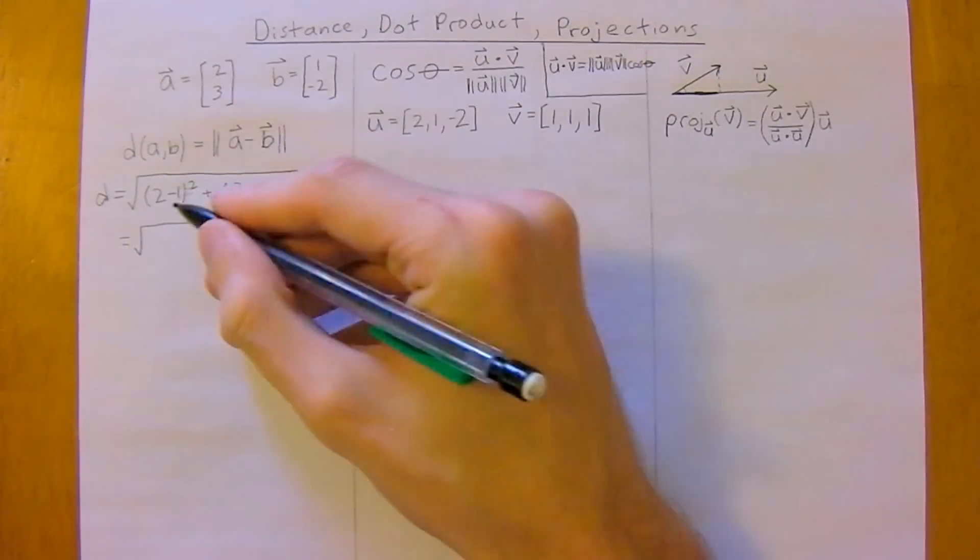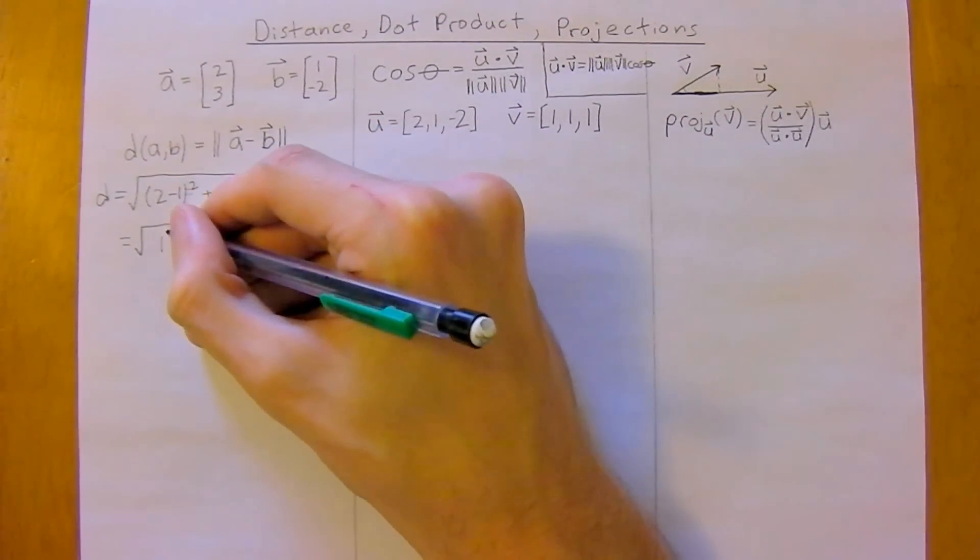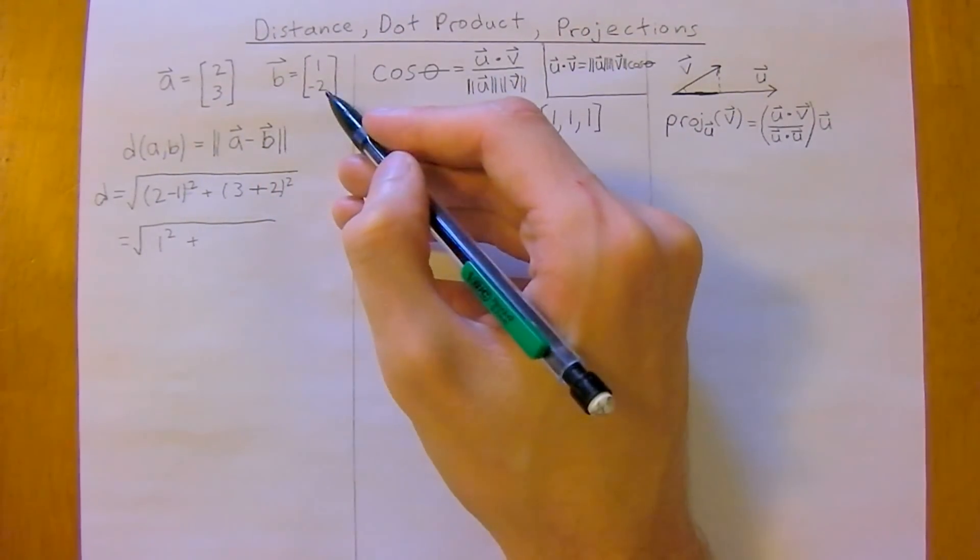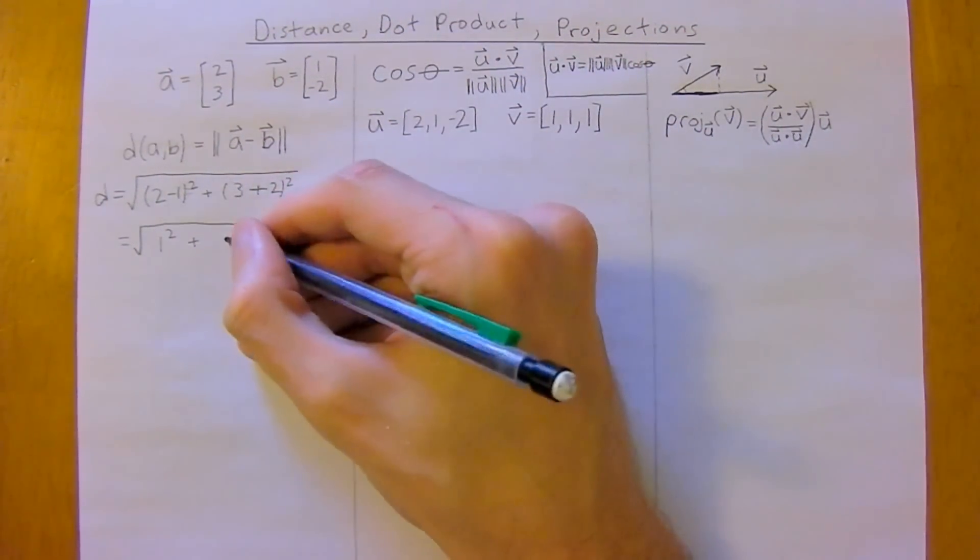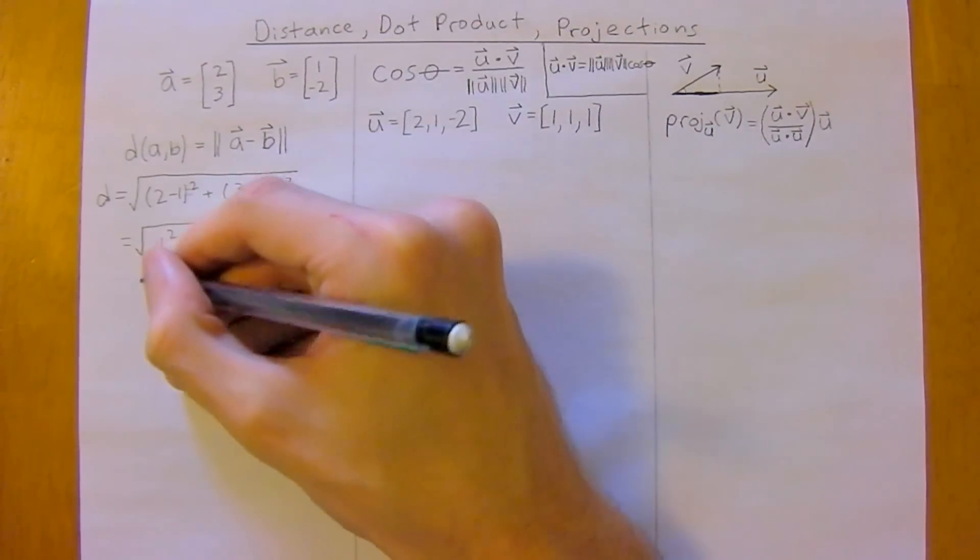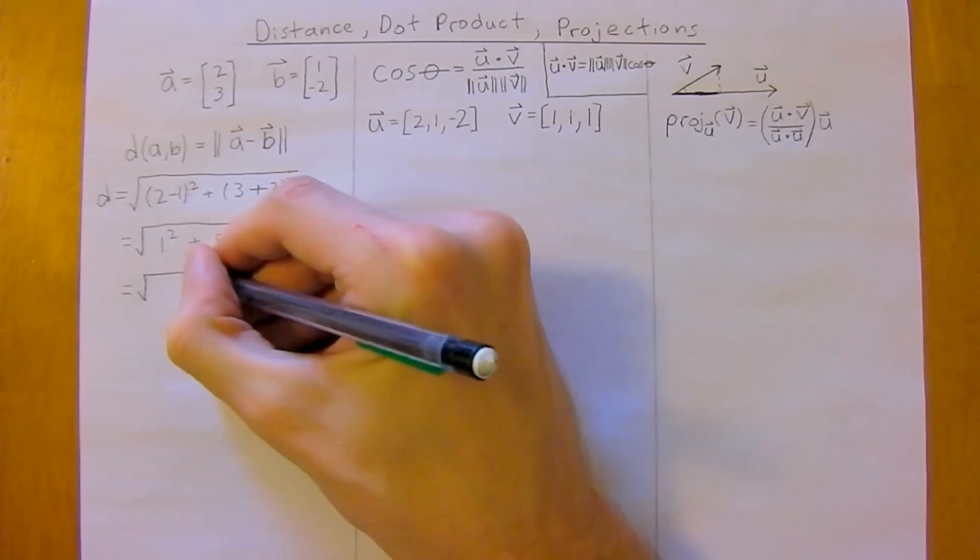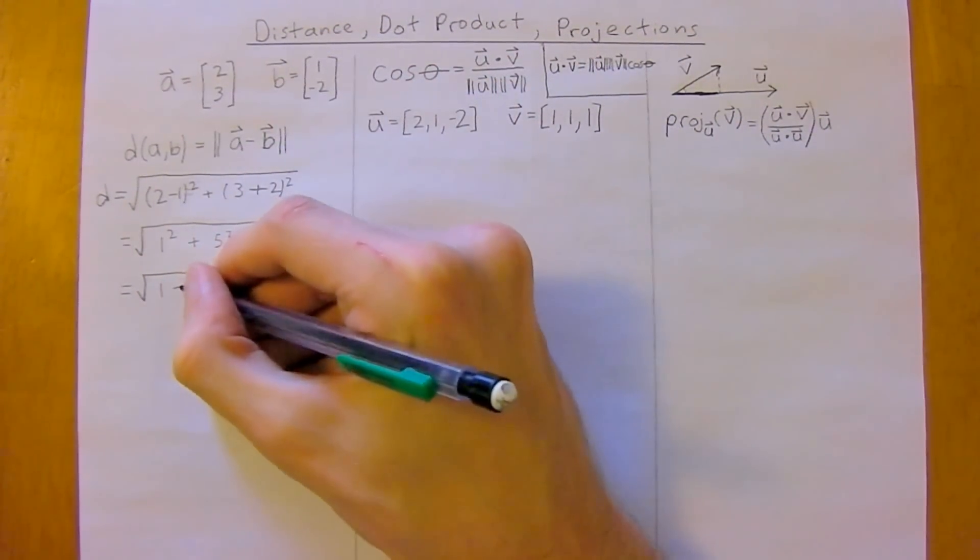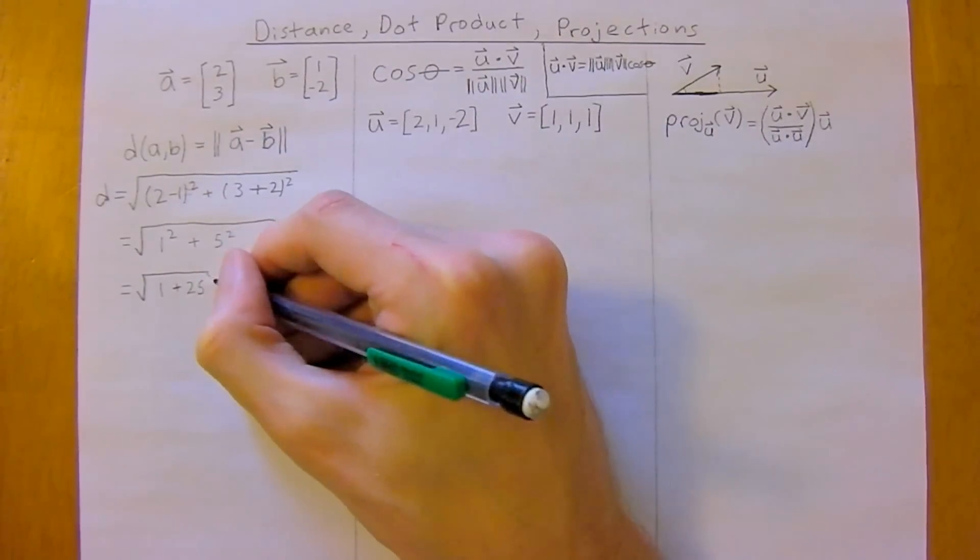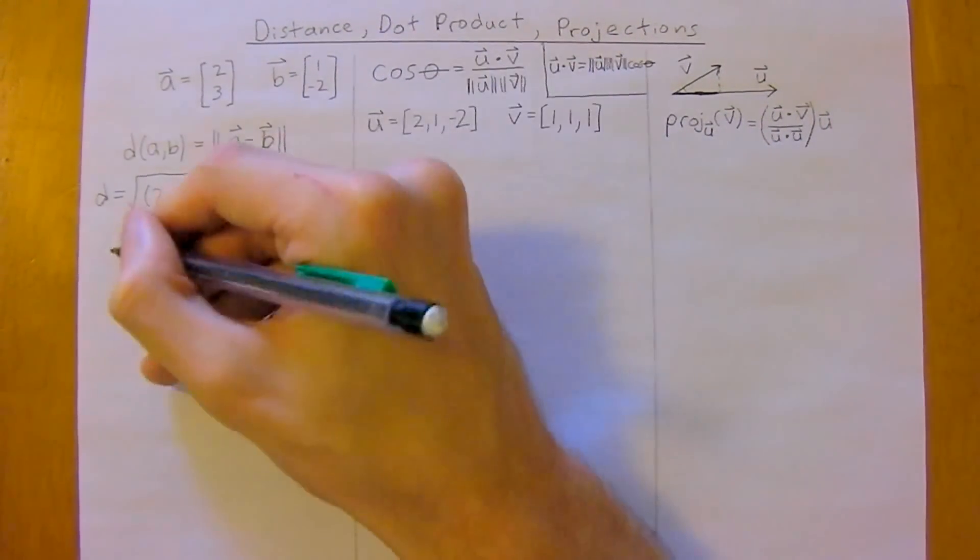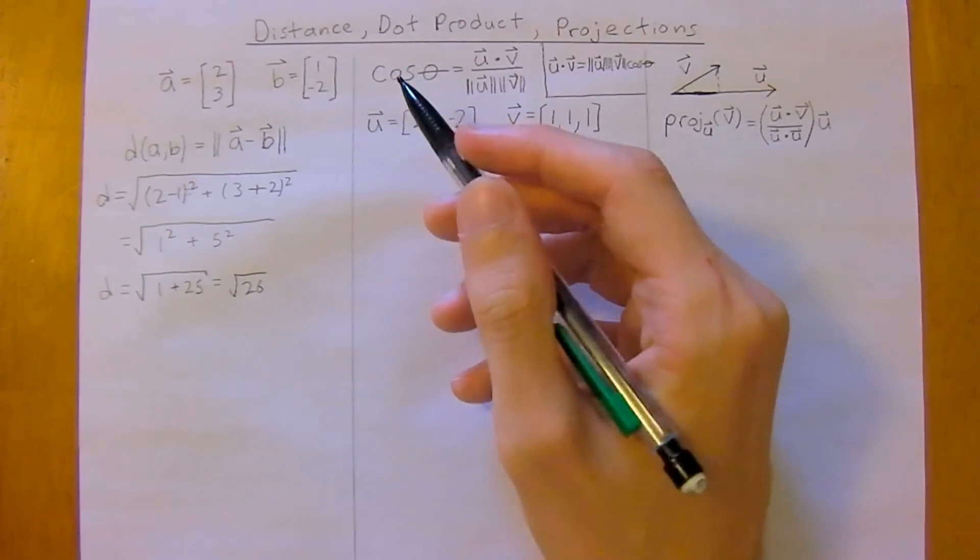So 2 minus 1 is 1 squared, plus, you know, 3 minus minus 2, or 3 plus 2, so 5 squared. So the distance between A and B is going to be 1 plus 25, which equals the square root of 26, and that's it. That's your distance.